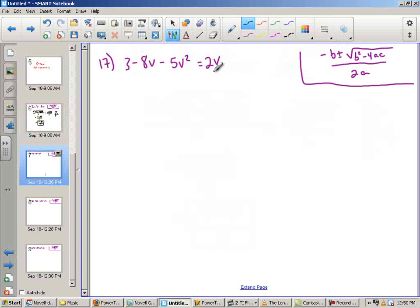On number 17, the issue is that it's not equal to 0, and it's not even in standard form. So when I make this change to move the 2v by subtraction, I'm also going to reorder it in descending order or standard form. So it will be negative 5v squared minus 10v plus 3 equals 0. So I now have my A, my B, and my C.